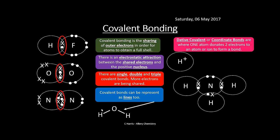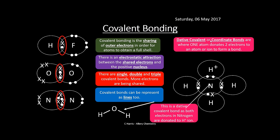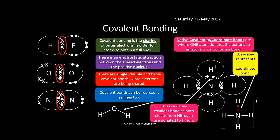Dative covalent bonds — also known as coordinate bonds — are where one atom donates a pair of electrons to another atom. For example, ammonia has a lone pair of electrons and the hydrogen ion H⁺ has no electrons, so it can't form a normal covalent bond. Both electrons have to come from the nitrogen. This is represented with an arrow showing the direction of donation — from nitrogen to H⁺. Make sure you get the arrow the right way around.